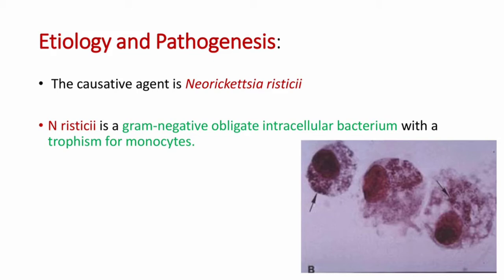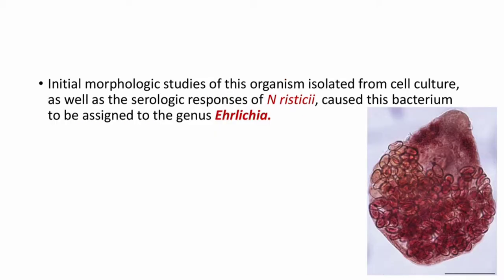Neorickettsia risticii is a gram-negative obligate intracellular bacterium with a tropism for monocytes. You can see the intracellular bacterium in monocytes here. Initial morphology studies of this organism isolated from cell culture, as well as serologic responses, caused this bacterium to be assigned to the genus Ehrlichia.